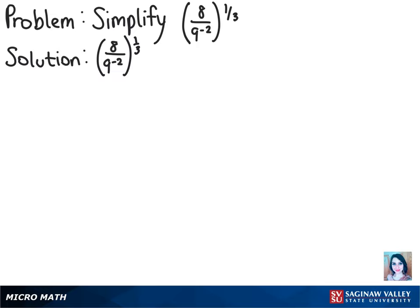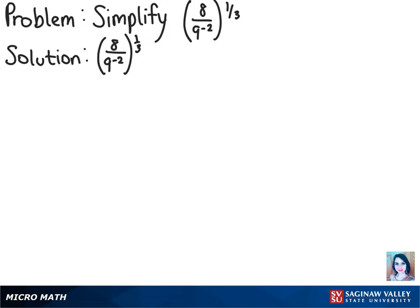So the first thing we can do to simplify this problem is raise the numerator and the denominator to the fractional power. So that will give us 8 to the 1/3 power over 9 to the negative 2/3 power.